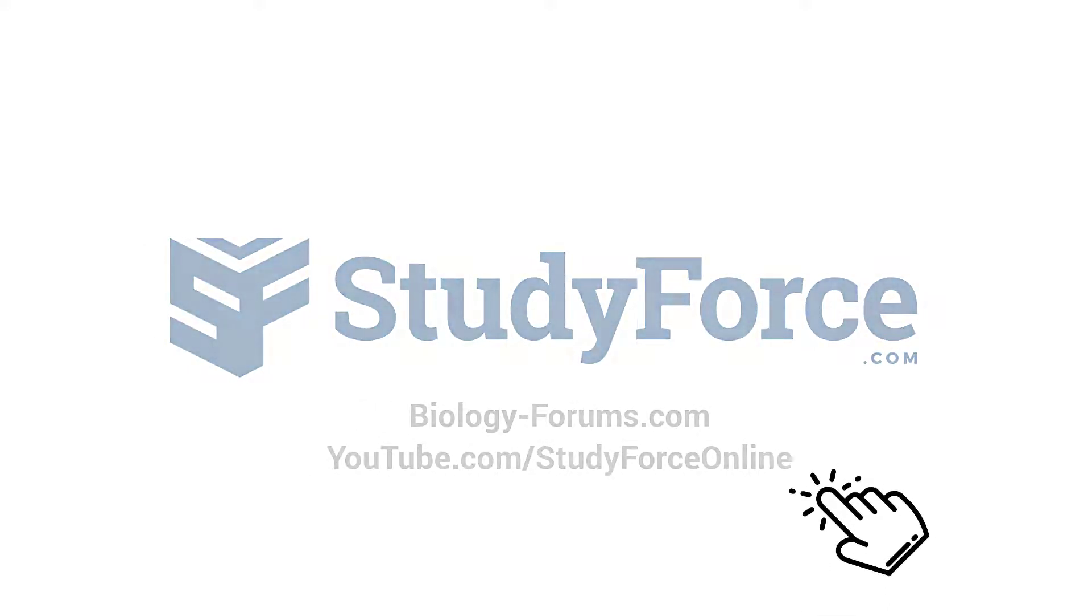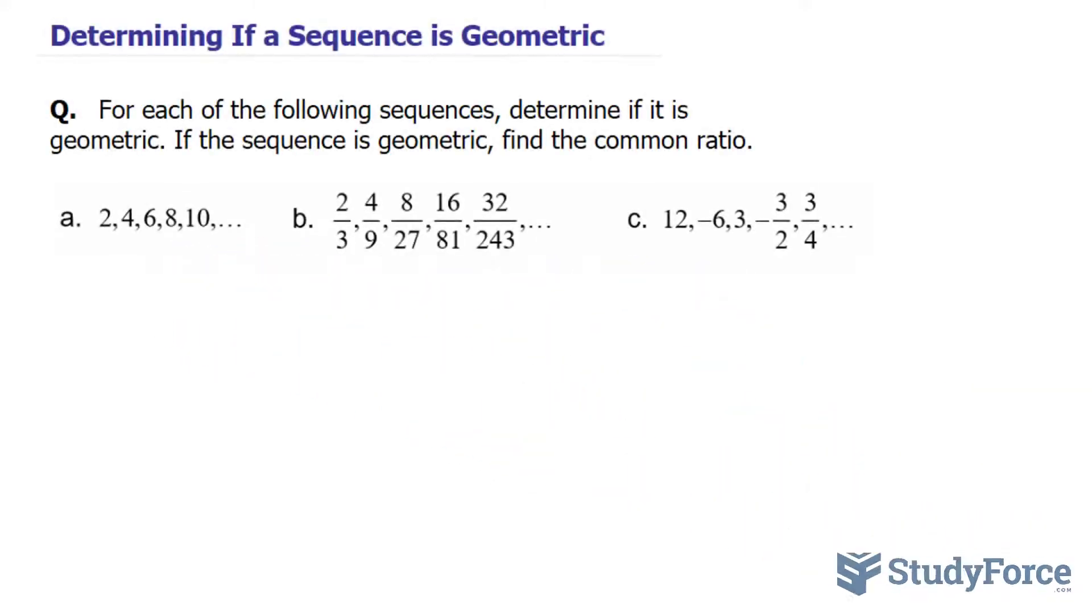In this lesson we'll learn how to determine if a sequence is geometric. A sequence is considered geometric if the ratio between each consecutive term is common.